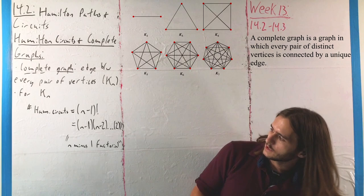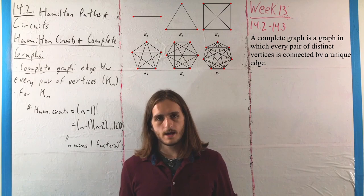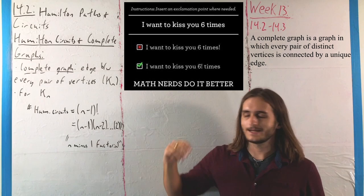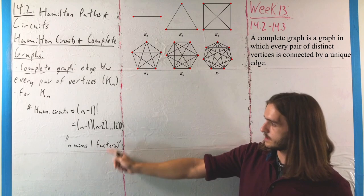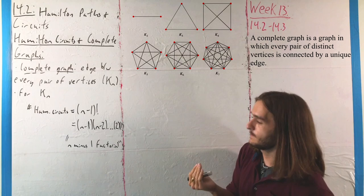If you want to describe the number of Hamilton circuits on a complete graph with n vertices, that is going to be the quantity (n-1) factorial, where (n-1)! is the descending product (n-1) times (n-2) times (n-3) times (n-4), all the way down to 2 and 1 multiplied together. This is read as (n-1) factorial, which does not indicate excitement but indicates multiplication.